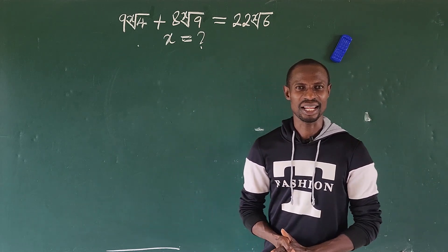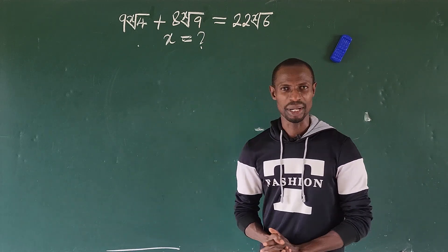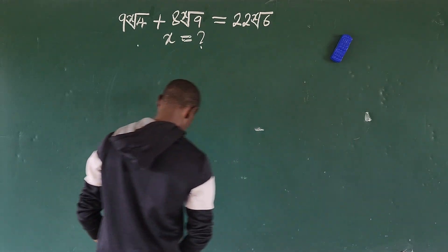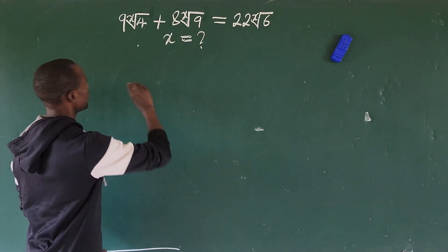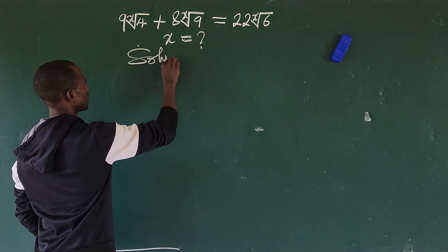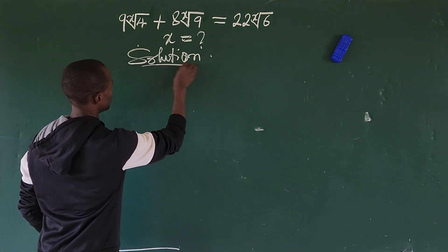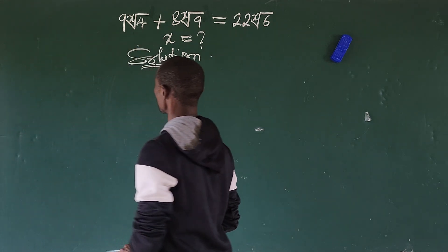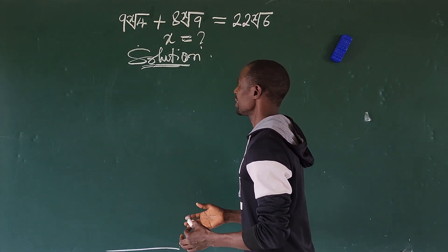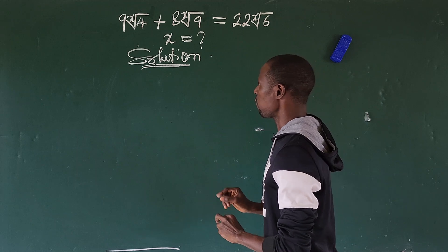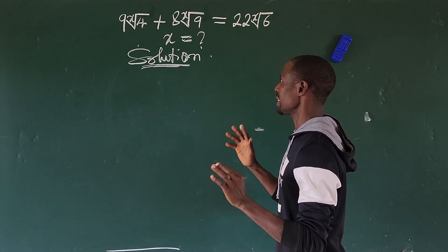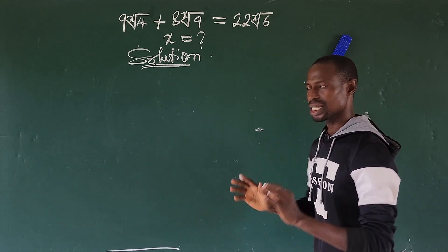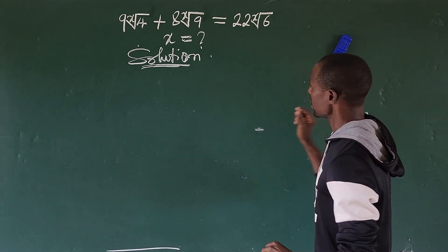Hi, welcome to today's class. Today we have this nice math problem for us. Let's solve this question together and see what x gives us. The question is: 9 times the x-th root of 4, plus 8 times the x-th root of 9, equals 22 times the x-th root of 6.